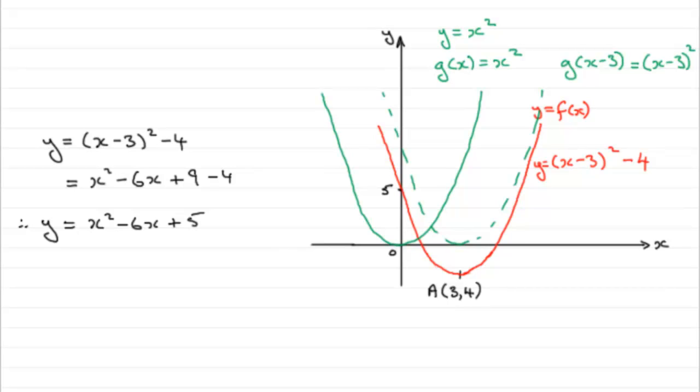Now in the last part, we're asked to show that the function does not have an inverse. And that's very easy to see because it's not a one-to-one function. In other words, you can see that if I had a particular y value, let's just say we had this one,